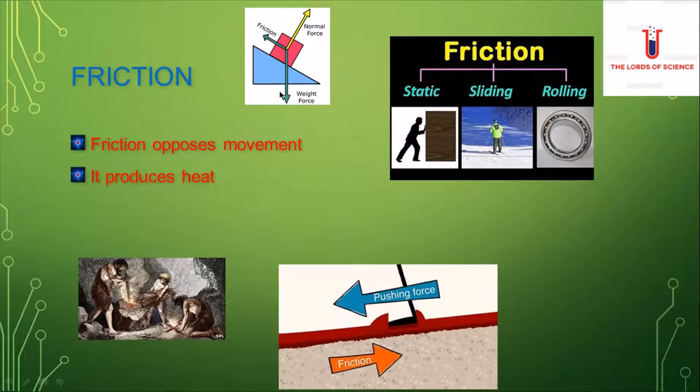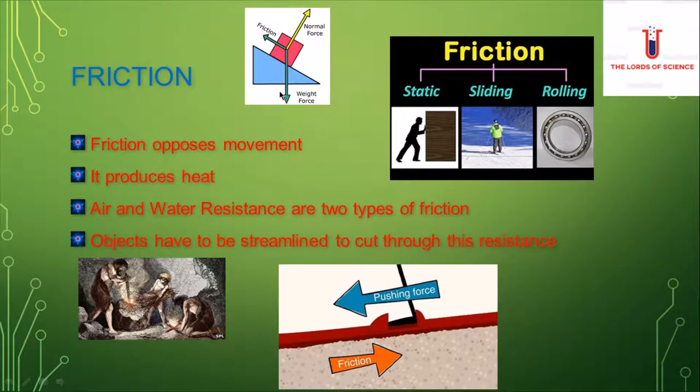It produces a lot of heat. Air and water resistance are two types of friction. Objects have to be streamlined to cut through this friction.